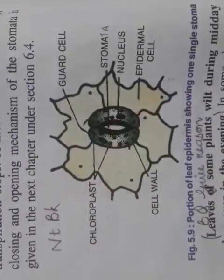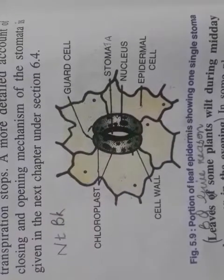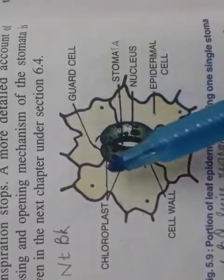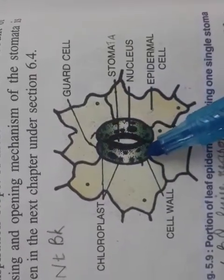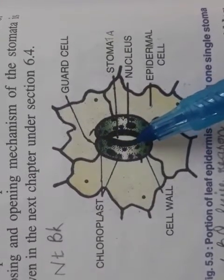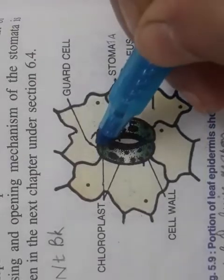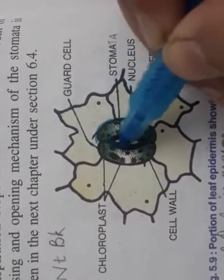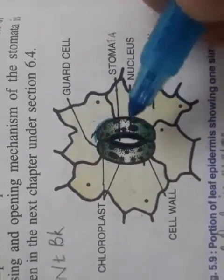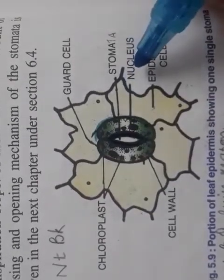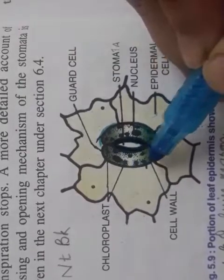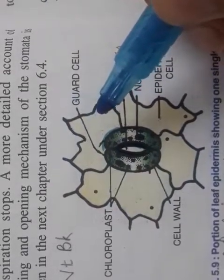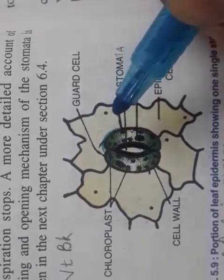Draw this figure in your notebook. Look at the shape of the guard cells. The outer wall is thin and the inner wall is thick. There is a nucleus present, and these small dots are chloroplasts, surrounded by epidermal cells. Do this diagram neatly.